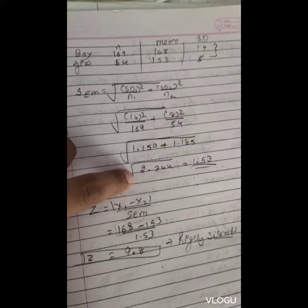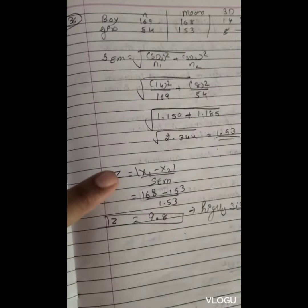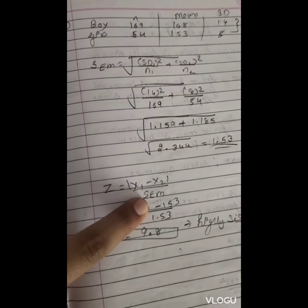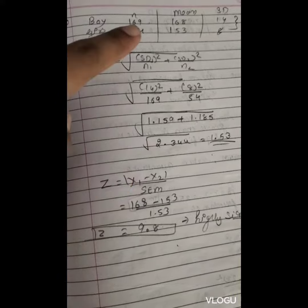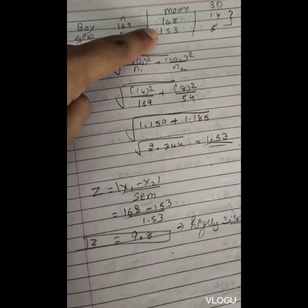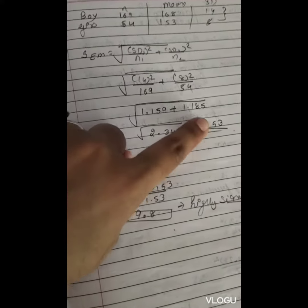Formula for z is x1 minus x2 divided by SEM. x1 and x2 are the means, which are 168 and 153. I am going to subtract them and divide by SEM that we have found which is 1.53.